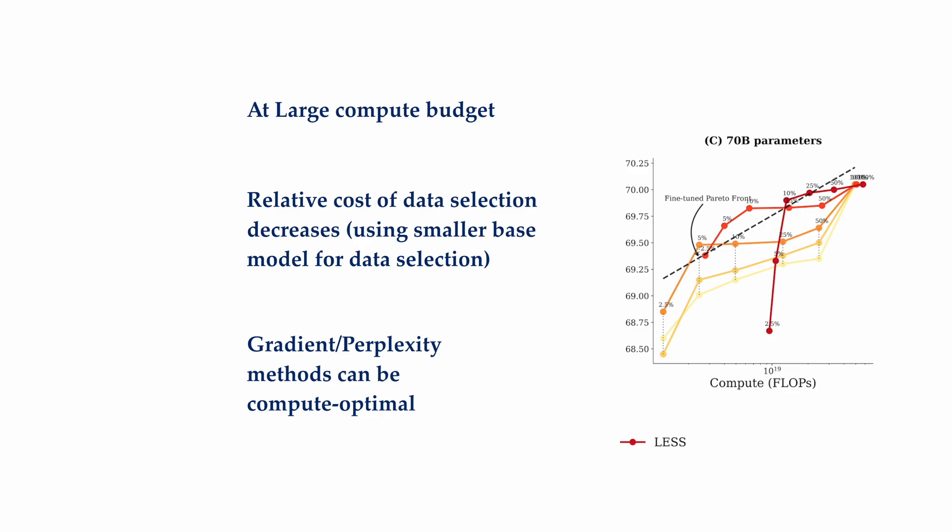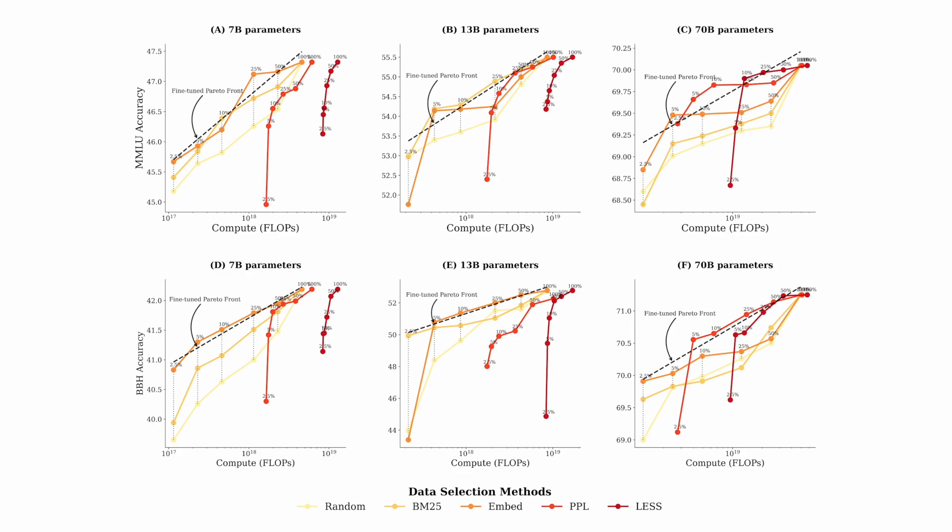At the largest 70b model size shown in the last column, we find that perplexity and gradient actually outperform both lexicon and embedding for the first time. This suggests that at a very large compute budget, more sophisticated and costly method can gain a greater advantage compared to lexicon and embedding methods. As model sizes continues to scale, and the relative cost of data selection shrink, we should expect these advanced methods becoming more compute optimal.